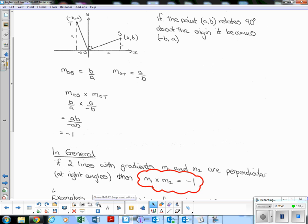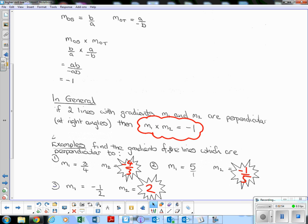Basically, going back up to here, if we do B over A times A over negative B, we're going to get negative 1. So we're told that they are perpendicular, so we're told that the product can be negative 1.